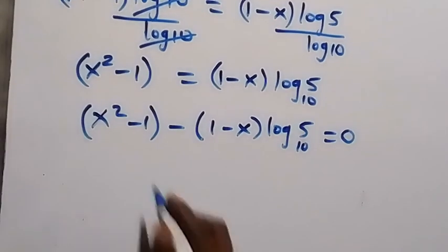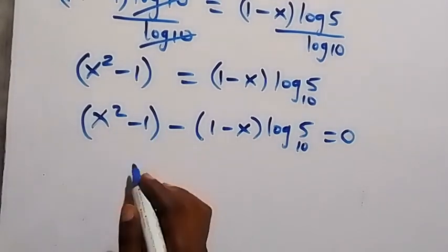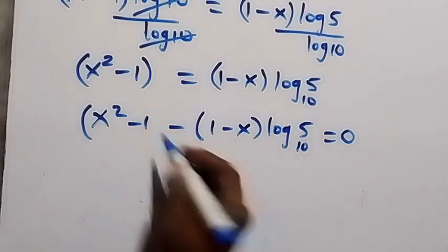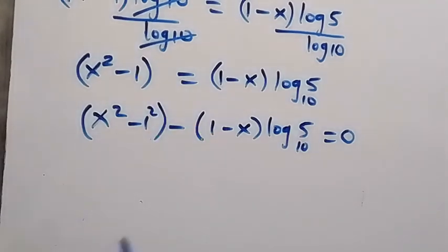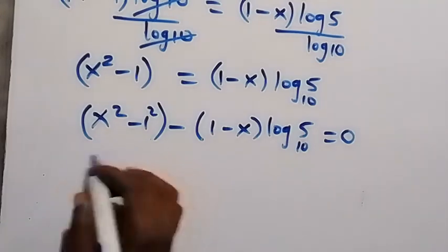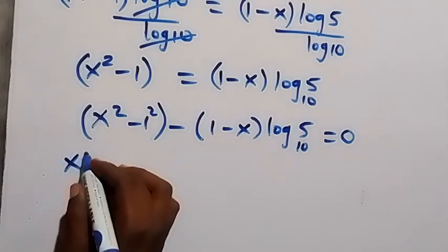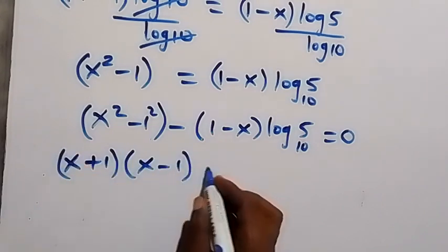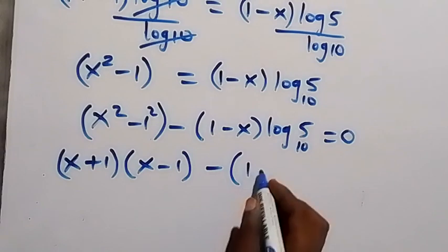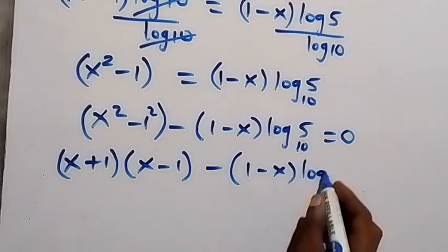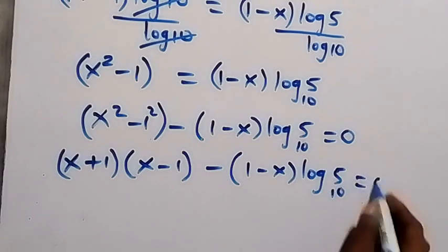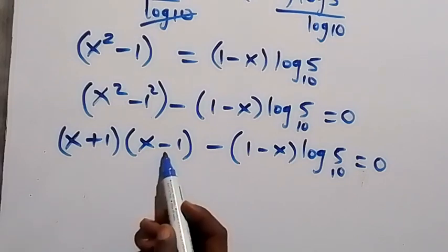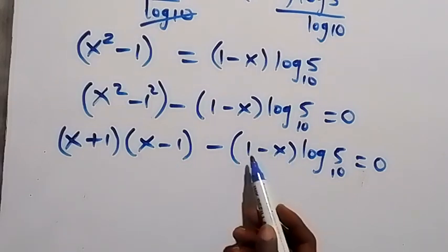From here x squared minus 1 can be written as x squared minus 1 squared — using the difference of two squares, this factors as x plus 1, multiplied by x minus 1. So we have: x plus 1, times x minus 1, minus bracket 1 minus x, times log 5 base 10, equals 0.